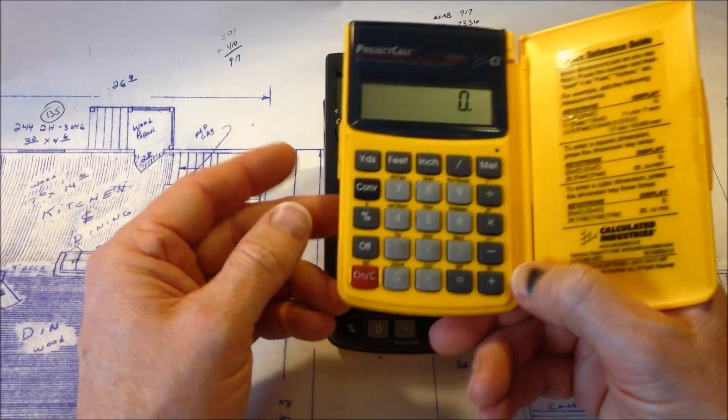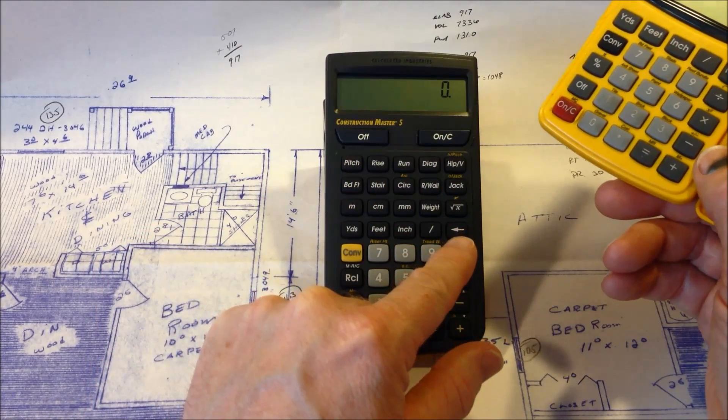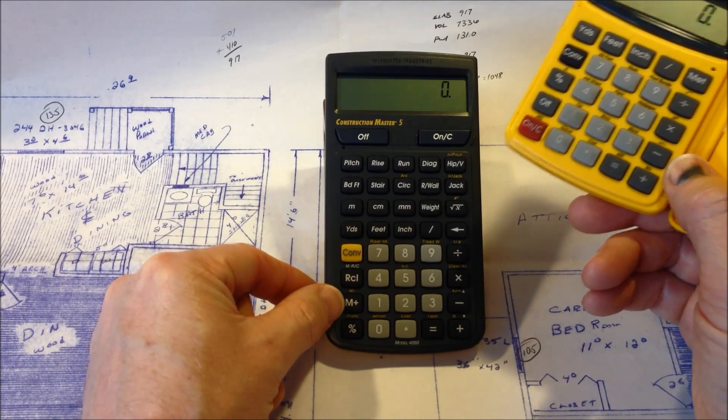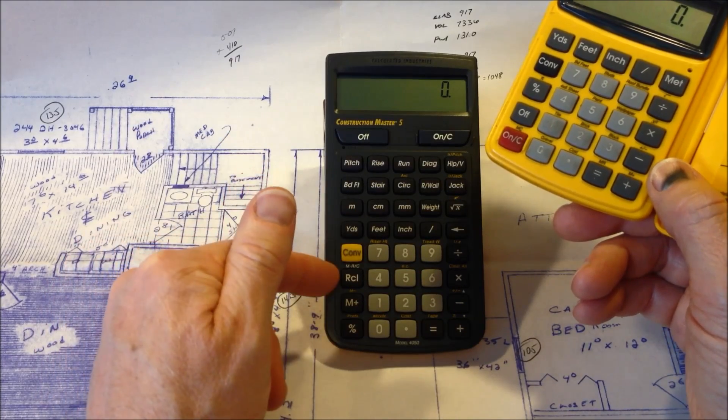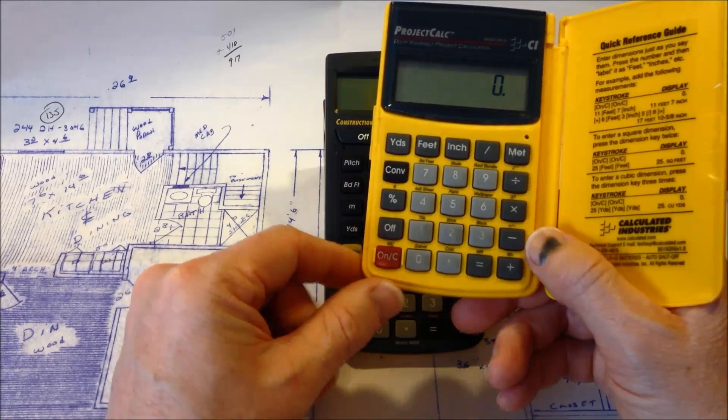So one of the simple things was simply the backspace. This has a little back arrow that you can use as a backspace. And this one also has a memory plus function. So if you're adding multiple things, you can just keep adding through the memory. And this calculator doesn't have a memory function to it.